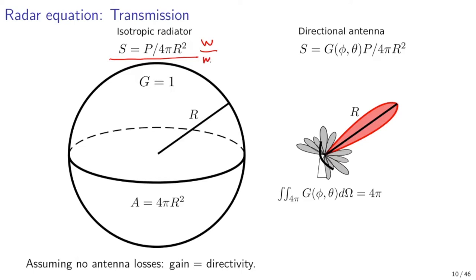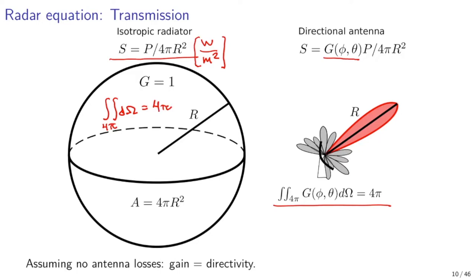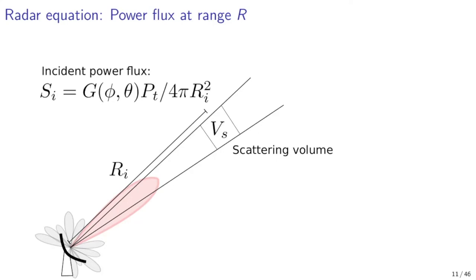A large radio antenna allows focusing of power into a narrow solid angle in space. The ability of a radio antenna to focus power into a certain direction is described by antenna gain. Assuming no losses within the antenna, if you integrate gain over the unit sphere in solid angle, the integrated antenna gain evaluates to 4π — the same value as for an isotropic radiator. This means that energy is conserved: both antennas radiate the same total power, but a large directive antenna can focus it into a small solid angle. We now have an expression for incident power per unit area arriving at a volume at range R_i, focusing on the region where antenna gain is maximized.